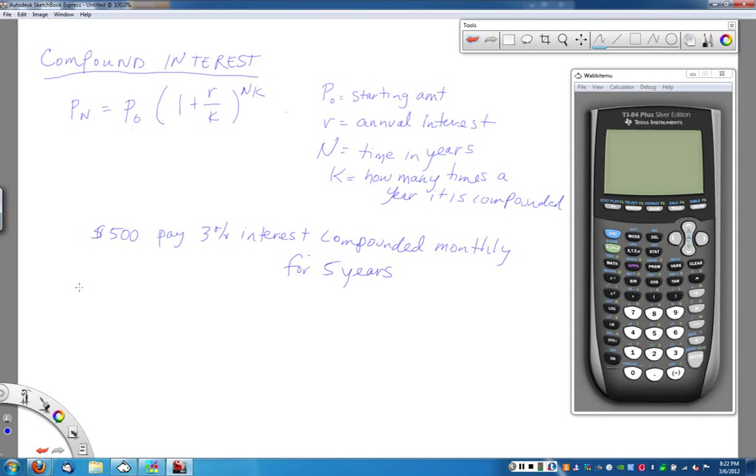If I'm going to do this, what we're going to figure out here is, let's identify what my variables are. The P0 is the starting amount. In this case I'm starting with $500. My R is my annual interest rate which was 3%. Be sure to change it to a decimal because we're going to use it in a formula. So .03. Capital N is how many years it's going to be in the account. In this case I'm doing it for five years. K is how many times a year it's being compounded. If it's being compounded monthly, there's 12 months in a year. So my K is 12.